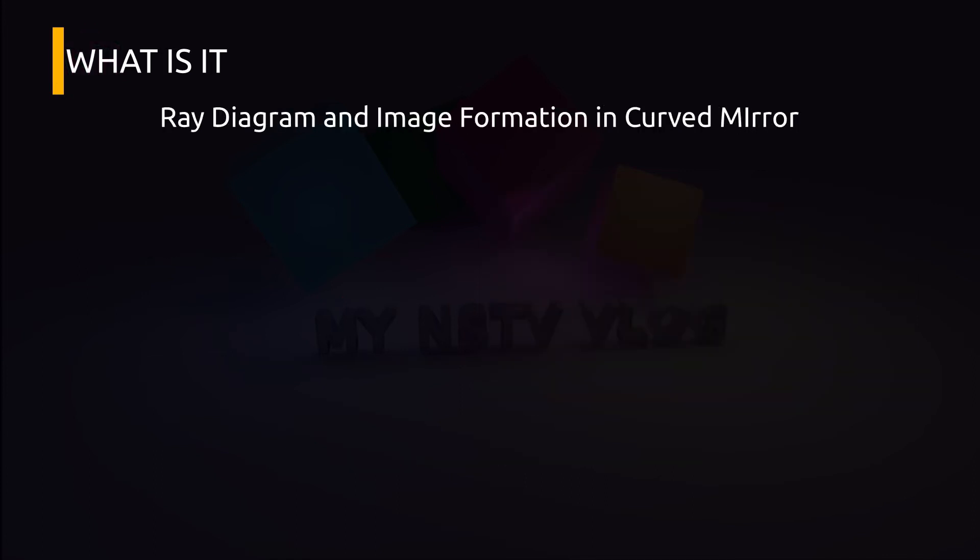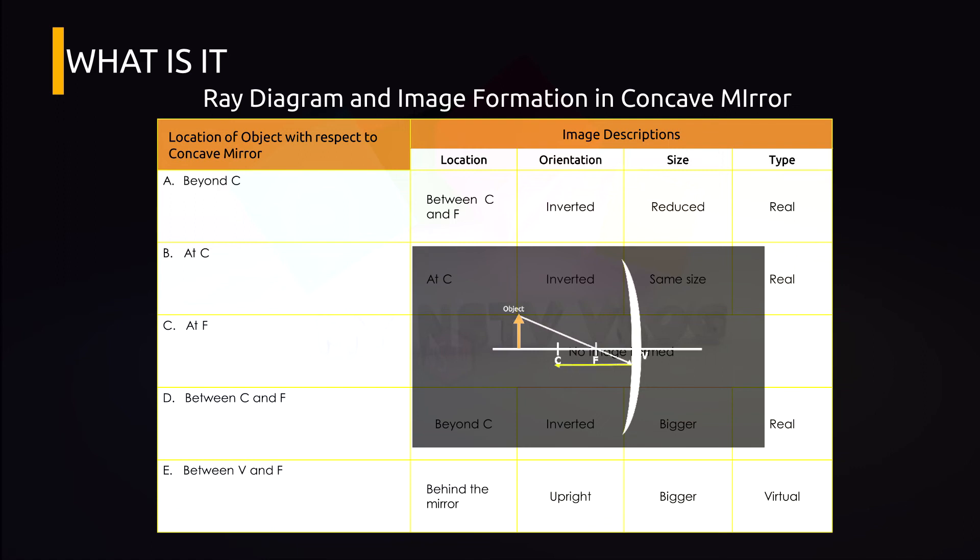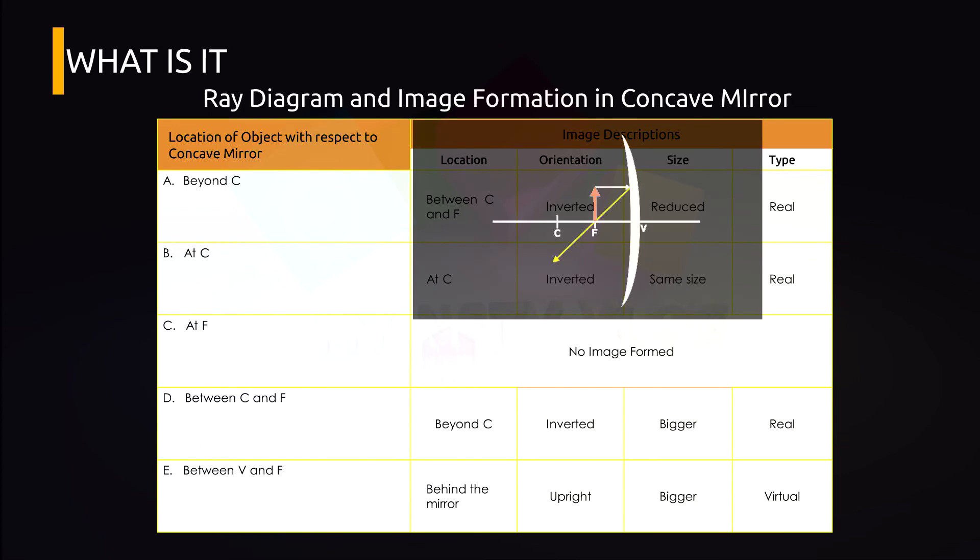Let's have first the concave mirror. Please refer to the table on page 12 of your module. So let's have number 1. If the object is beyond the center of curvature, the image location is between C and F. The orientation is inverted, the size is reduced or smaller, and the type of image is real. For letter B, when the object is at the center of curvature, the location of the image is at the center of curvature. The image is inverted, same size, and real image is formed. If the object is at the focus, there will be no image formed.